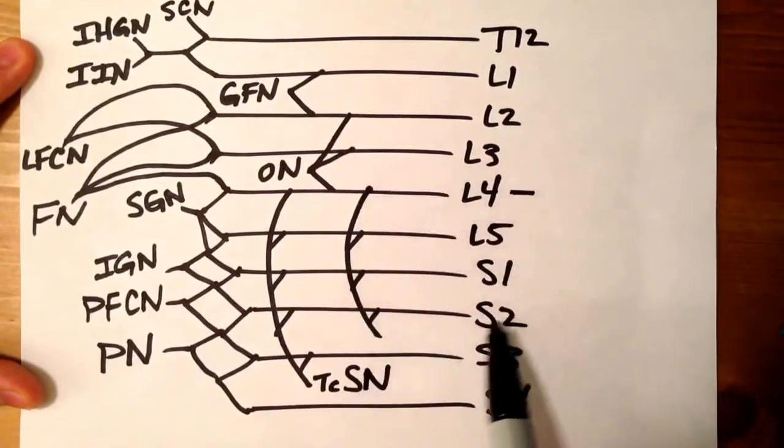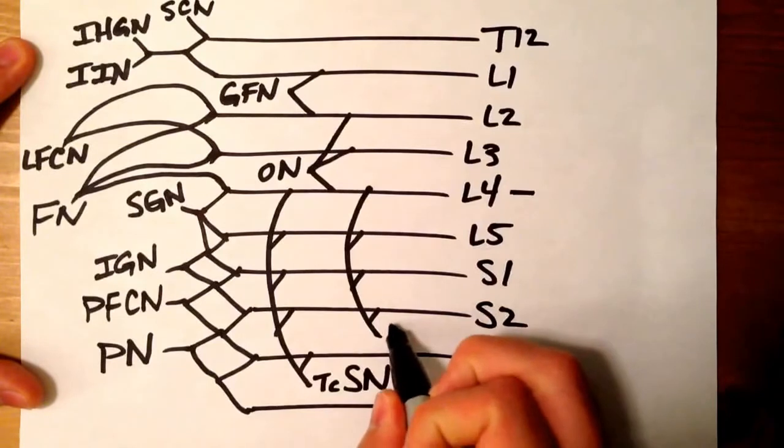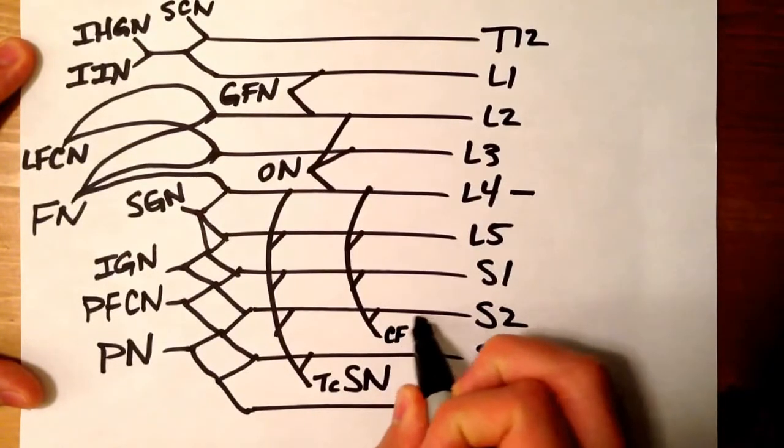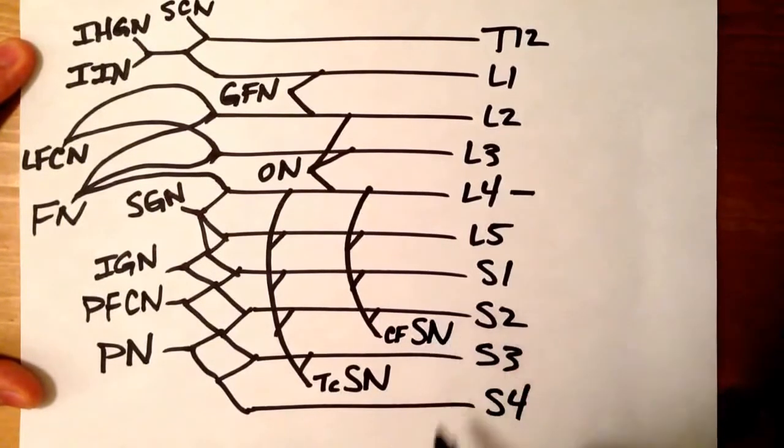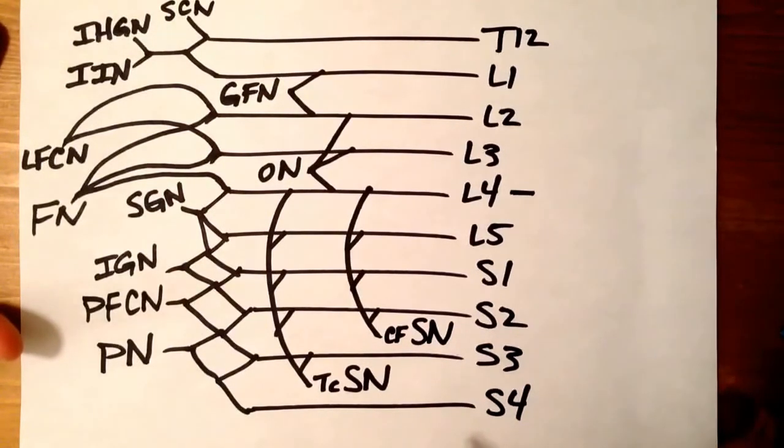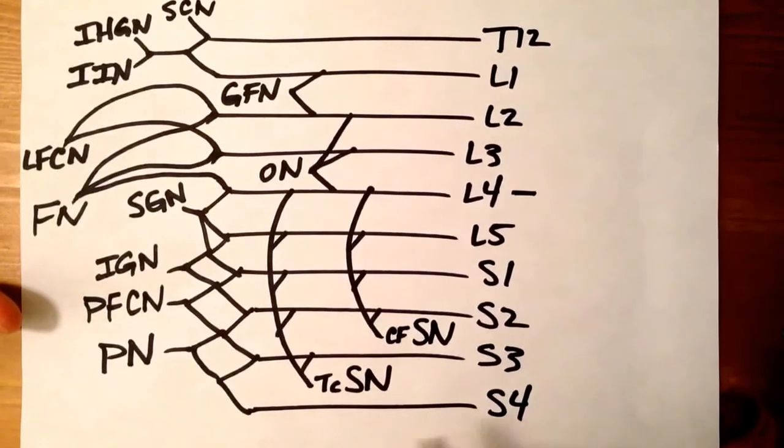Between L4 and S2, that's your common femoral branch of the sciatic nerve. And that's pretty much it. So try that out. Draw it over and over until you can get it down. And hopefully that helps out. Good luck.